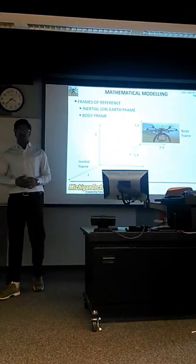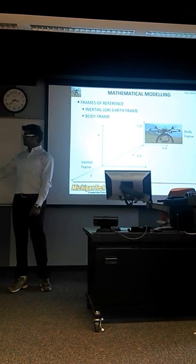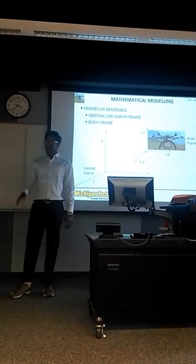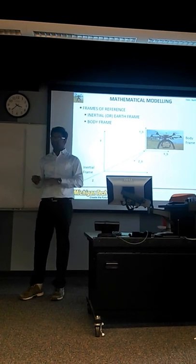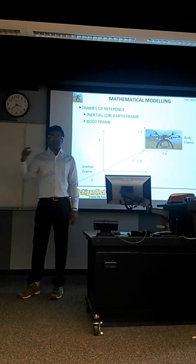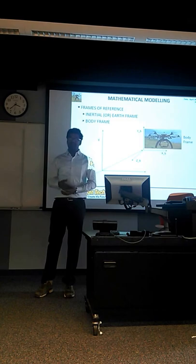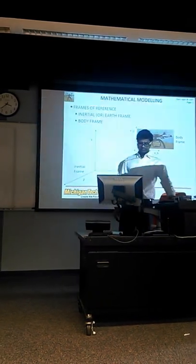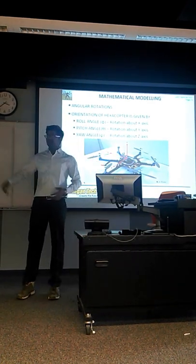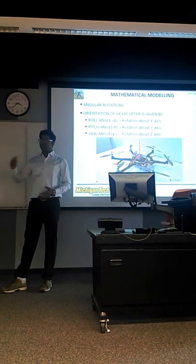Basics of mathematical modeling: first, we need to know what the frames of reference are. Basically there are two frames of reference — one is the inertial frame and one is the body frame. The inertial frame is a fixed frame. Suppose we assume we are measuring the motion of the hexacopter from here — that is the inertial frame. The instantaneous frame is the body frame, which is created at the point where the motion is happening. The position and velocity can be seen in both earth frame and body frame.